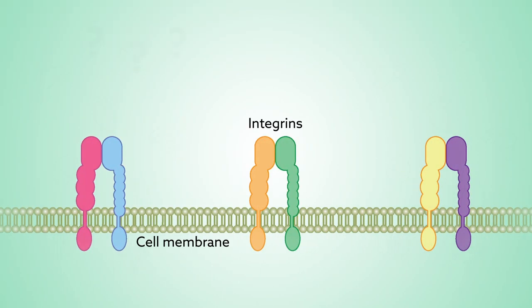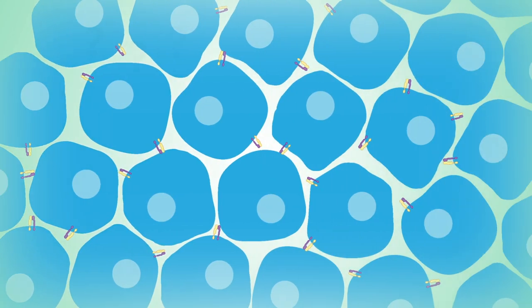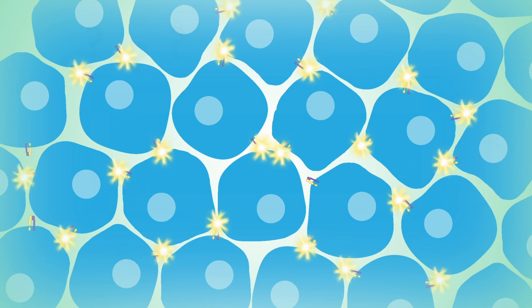Integrins are a family of glue-like proteins that help stabilize the structure of cells within their surrounding environment, and help cells communicate to the outside world, and vice versa.